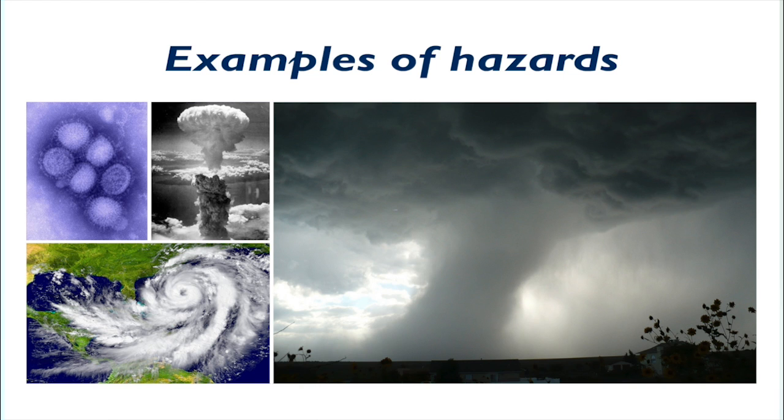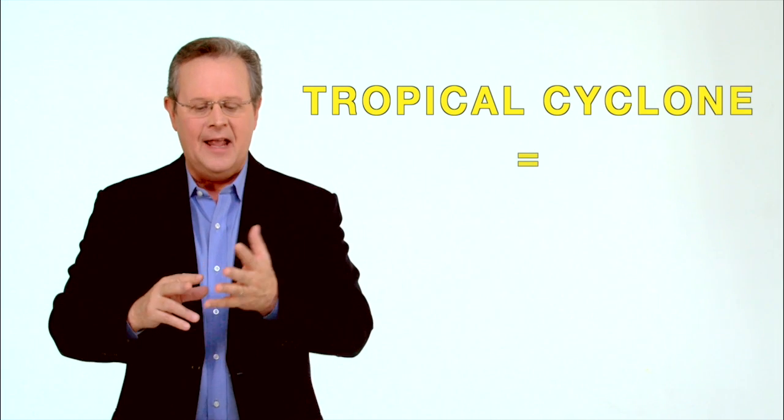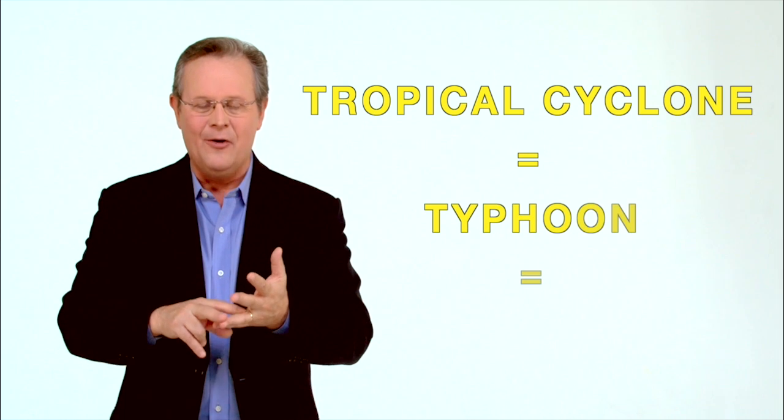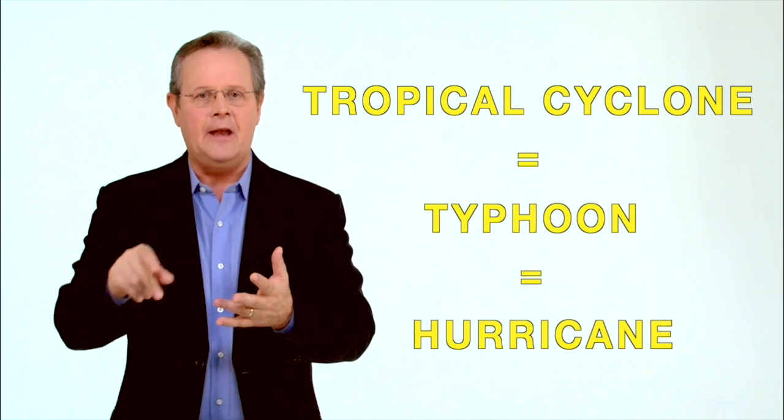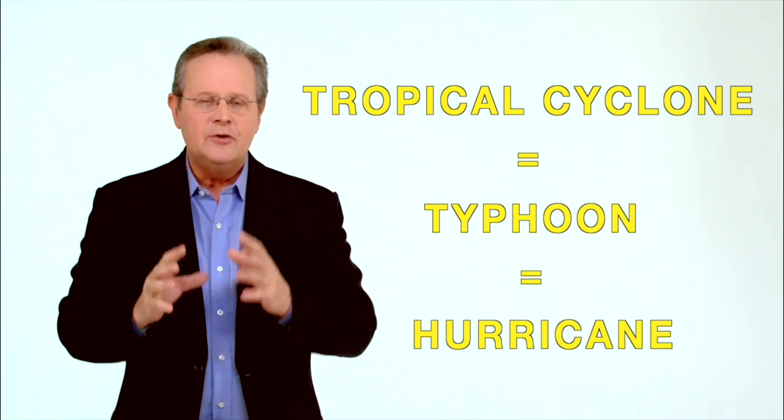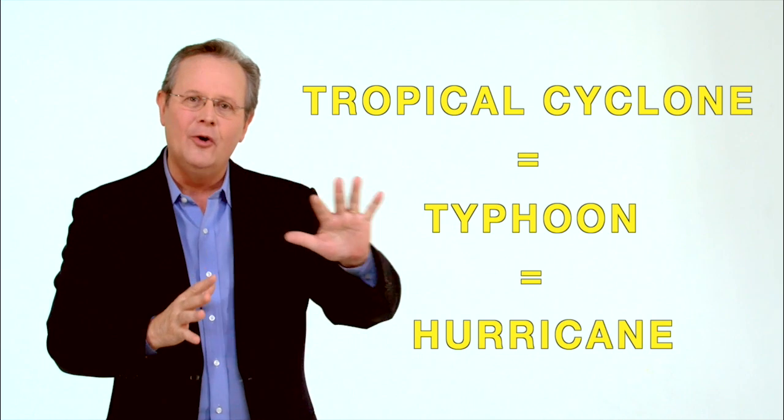And I like to give this example. When we're talking about, for example, a tropical cyclone. Now a tropical cyclone, it's the same thing as a typhoon and a hurricane. It's just named differently in different areas of the world. So if a tropical cyclone were to occur in the ocean and it never went across an island where people live, it would only be a hazard.